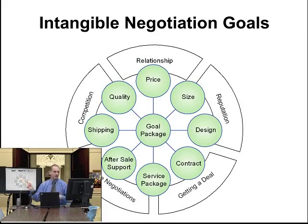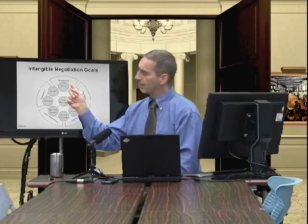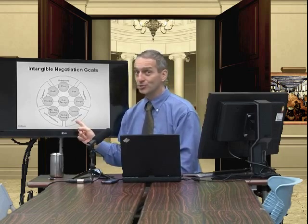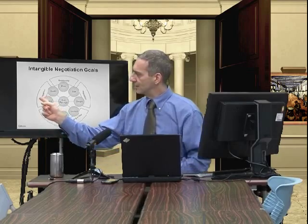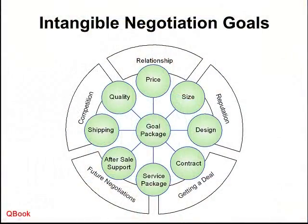However, on the outside of this picture are intangibles like relationship, reputation, getting a deal, future negotiations, and competition — other companies in the market. Relationship: if I buy from you now, maybe we can develop a relationship and in the future you can give me a better price. If I help you, can you help me later? Or we have a previous relationship — my company has bought from you before, so I trust you and I'll buy from you again, even though you may not have everything — price, size, design — that another company has.